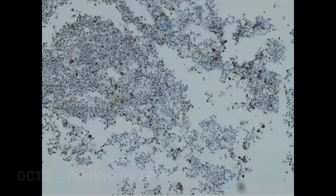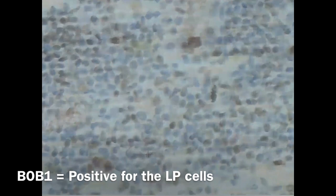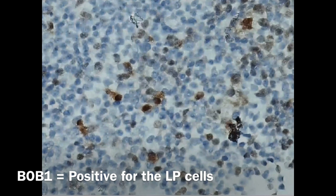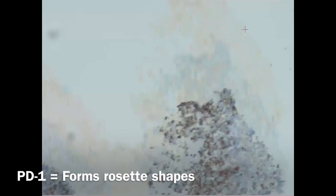This is the Bob1 stain. At higher magnification, you can appreciate this big cell taking the Bob1 stain with other B cells taking the stain surrounding it — so this one is Bob1 positive. This is the reverse compared to classic type. Another big cell here, looks like a popcorn cell, and it's taking the stain. So OCT2 positive and Bob1 positive.